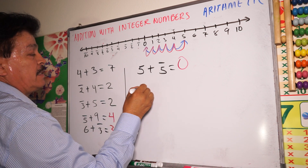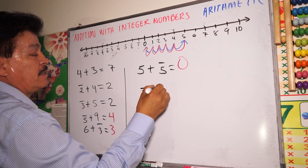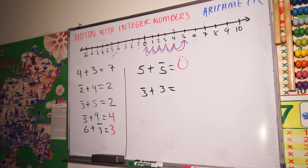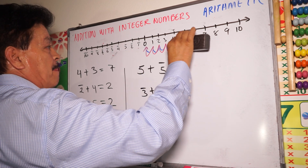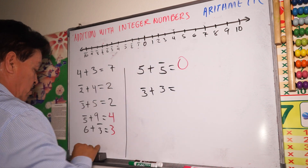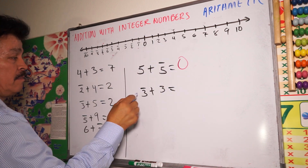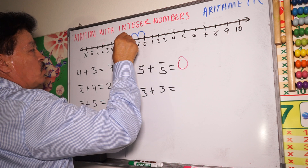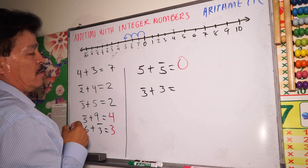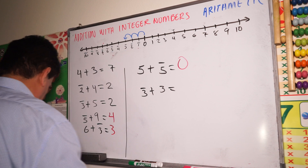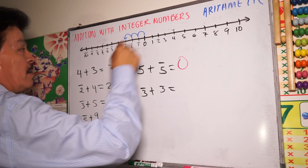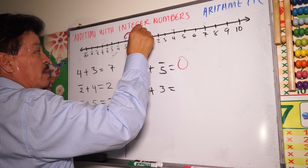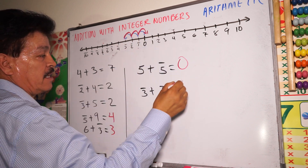Another one: minus three plus three. This is another symmetrical number. Minus three — one, two, three. Plus three to the right — one, two, three. It's zero. Do you see?